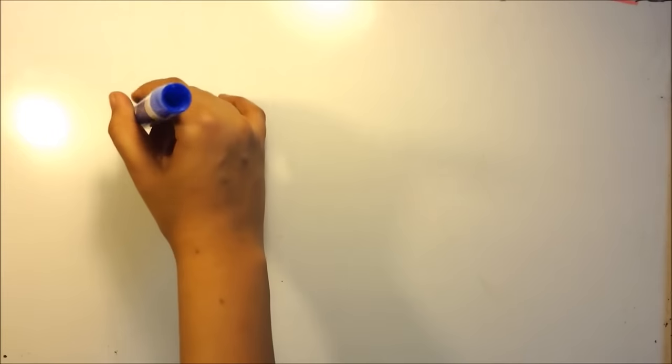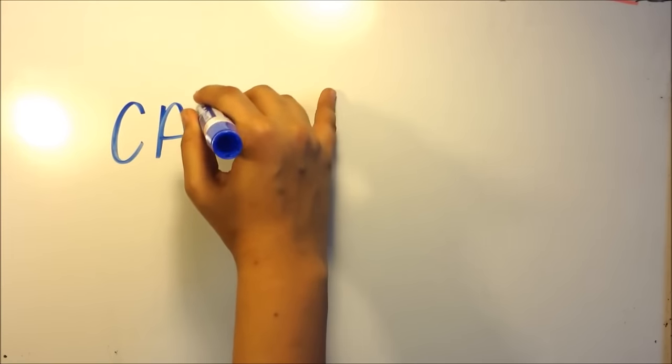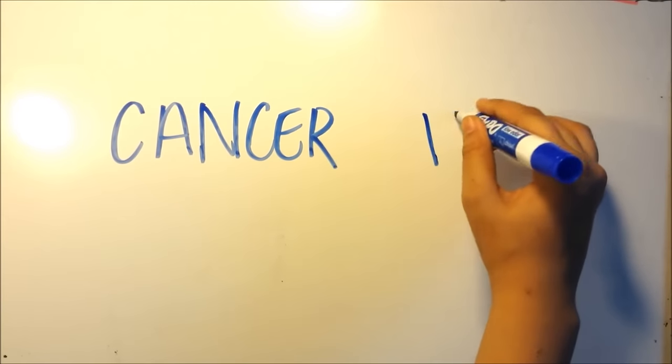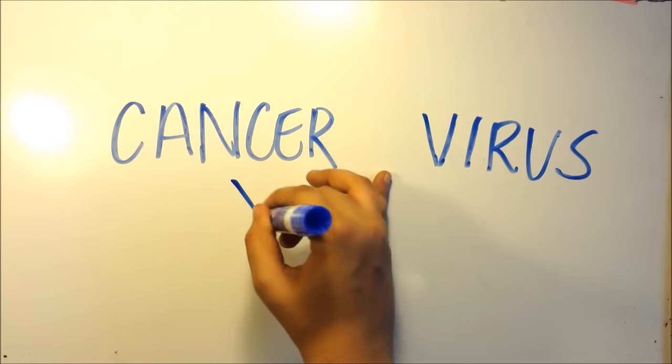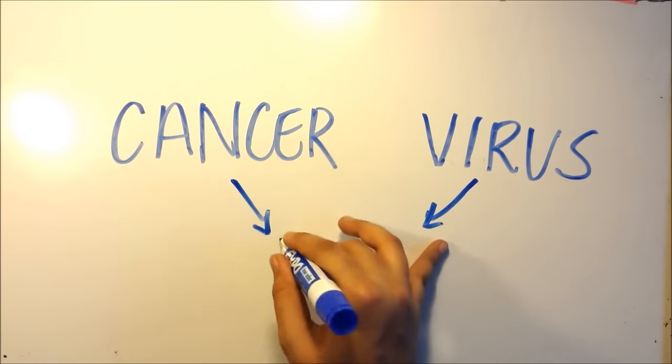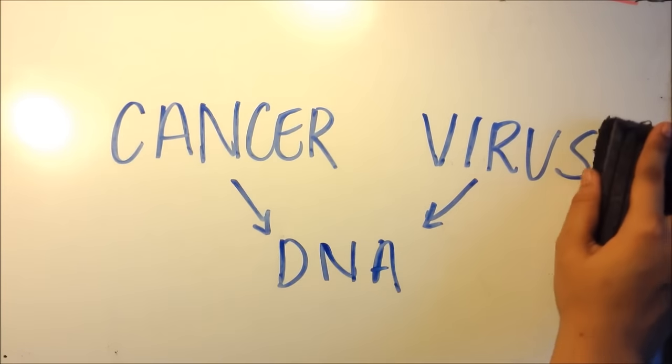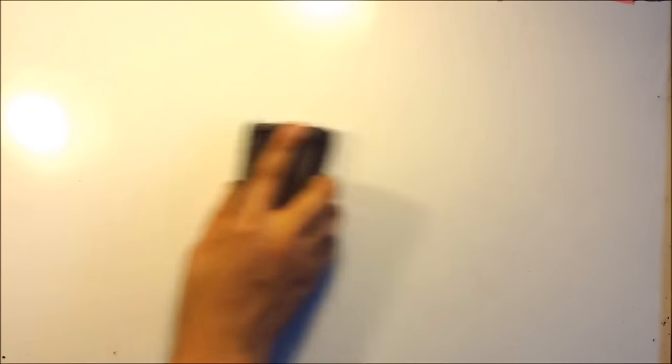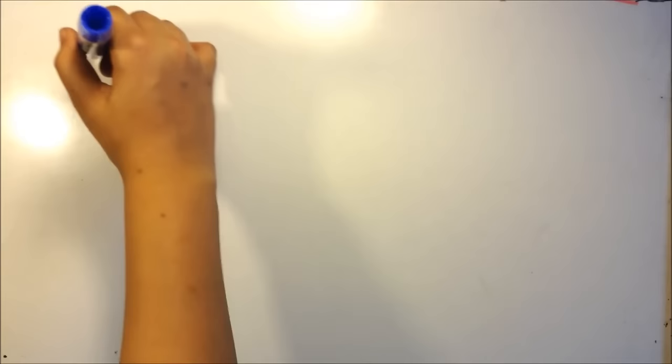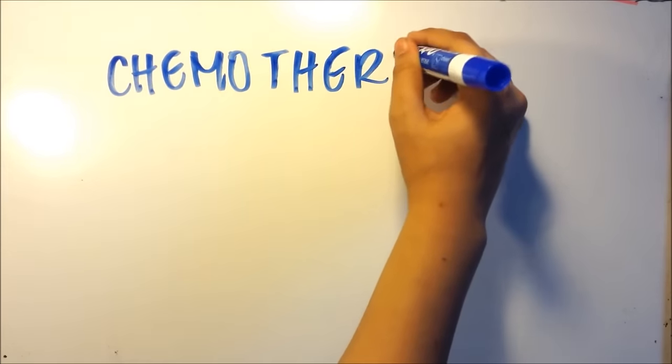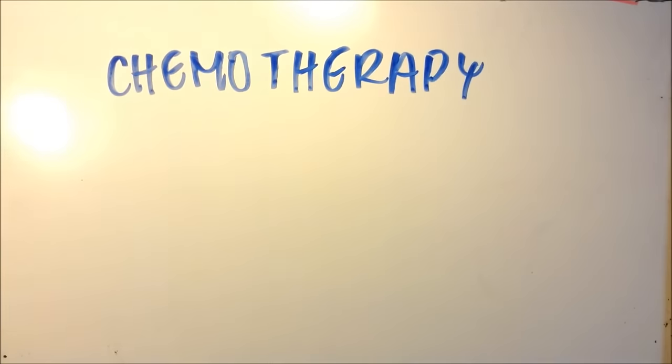Now, we know that cancer and viruses are two major components in oncolytic virotherapy. But how are they related? Well, there's a really simple answer. That's the DNA that we find within both of these entities, or the genetic material that we find. We see that in oncolytic virotherapy, that DNA and genetic material has a huge role. But why do we even need that?